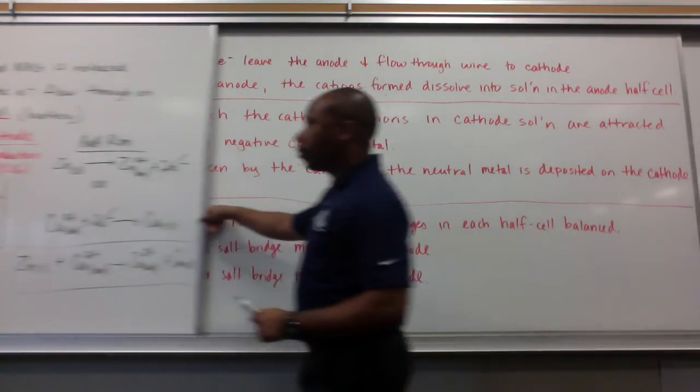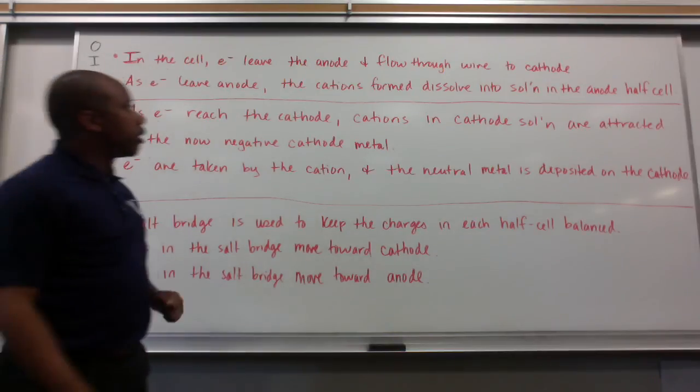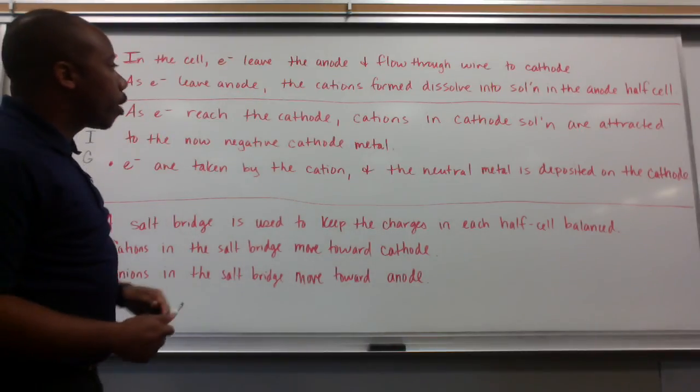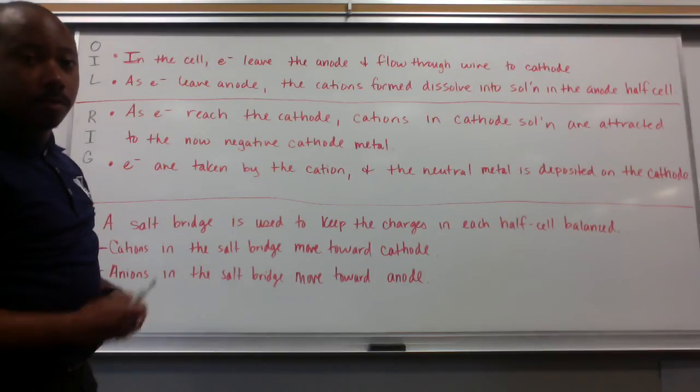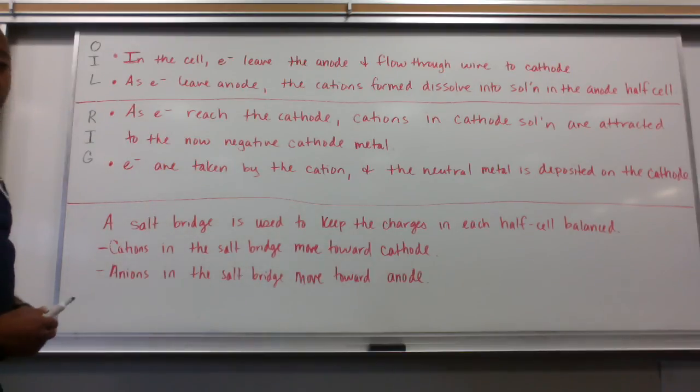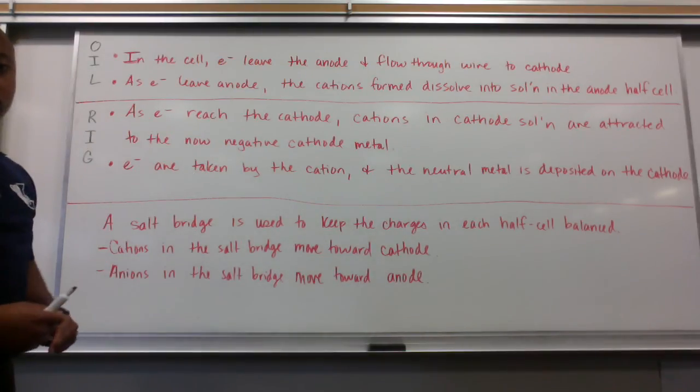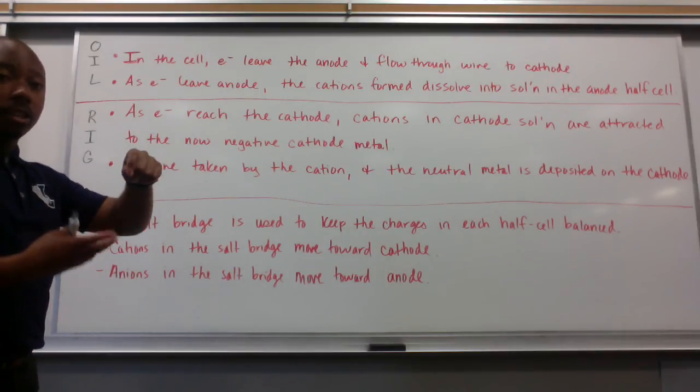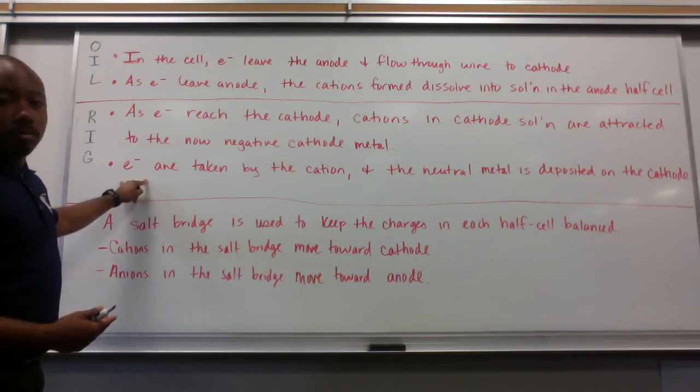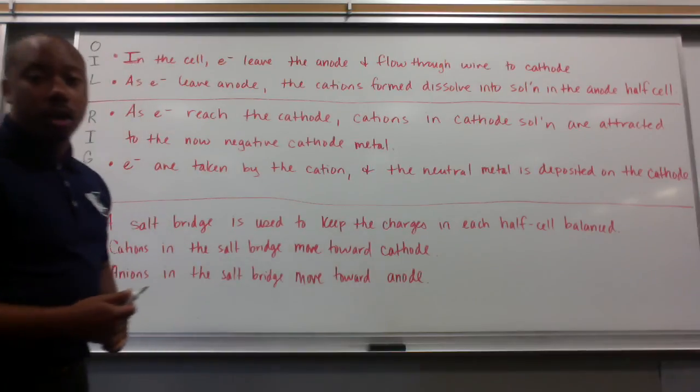Now, a little recap. At the anode, in the oil portion, in the cell, electrons left the anode and flowed through the wire to the cathode. As electrons leave the anode, the cations formed dissolve into solution in the anode half cell. That was the zinc forming zinc 2 plus. And at the cathode, as electrons reach the cathode, cations in the cathode solution are attracted to the now negative cathode metal. Electrons came over. The cations in solution, the copper 2 plus, was attracted to those electrons and now became electrically neutral metals. So the electrons are taken by the cation and neutral metals are deposited on the cathode.